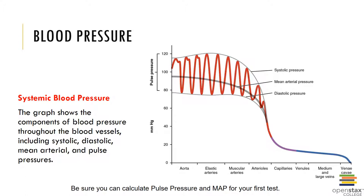Arterial pressure is not constant; it rises during ventricular contraction and falls during ventricular relaxation as the arterial walls stretch and then recoil. The peak blood pressure measured during ventricular contraction is called the systolic pressure, and the minimum blood pressure at the end of the ventricular relaxation phase is called the diastolic pressure. An average adult blood pressure is around 120 over 80 millimeters of mercury. The difference between systolic and diastolic pressure is the pulse pressure. The mean arterial pressure, or MAP, is calculated by adding one-third of pulse pressure to the diastolic pressure.